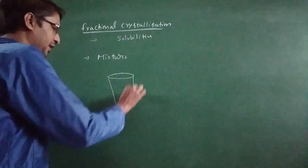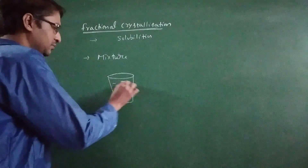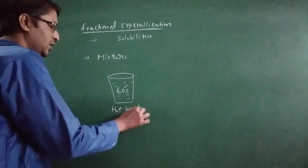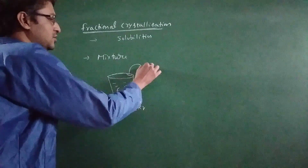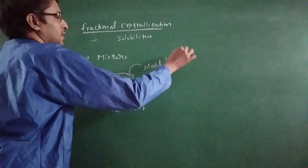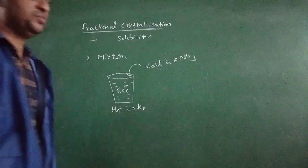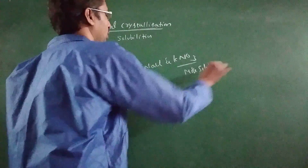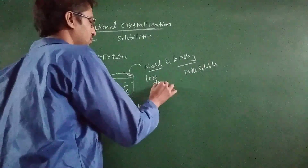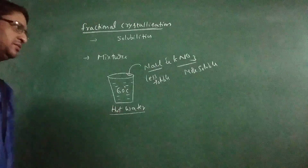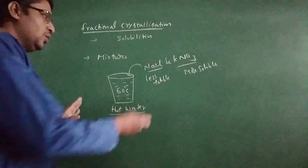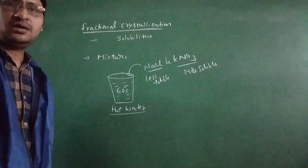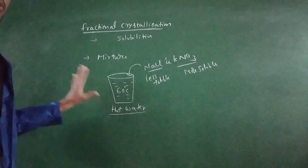For example, if we take water at 60 degrees centigrade — hot water — and dissolve NaCl and KNO3 (potassium nitrate) in it, potassium nitrate is more soluble while NaCl is less soluble in hot water. We add this mixture until it is dissolved to prepare a saturated solution.